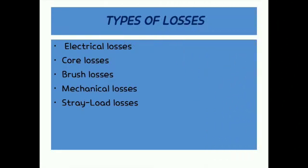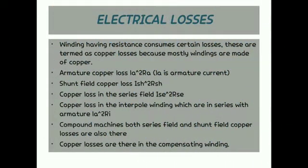First is electrical losses. Windings having resistance consume power, and these are termed as copper losses because mostly windings are made up of copper. Armature copper loss is Ia² × Ra, where Ia is armature current. Shunt field copper loss is Ish² × Rsh.